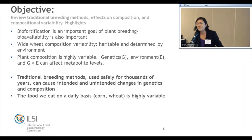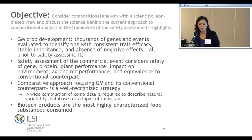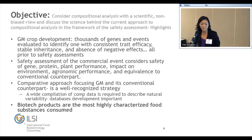As Owen said, there's segregation in your corn flakes. In GM crop development, we know that thousands of genes and events are evaluated to identify the one or possibly two that have consistent trait efficacy, stable inheritance, and absence of negative effects — and this is all before the safety assessment. Then the safety assessment considers the safety of the gene, the protein, plant performance, impact on the environment, et cetera. Biotech products are the most highly characterized food products consumed.